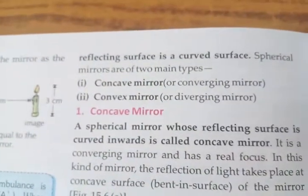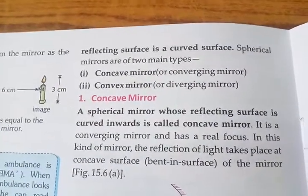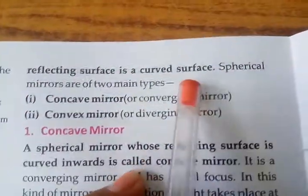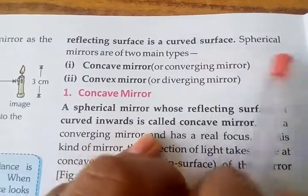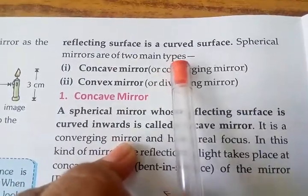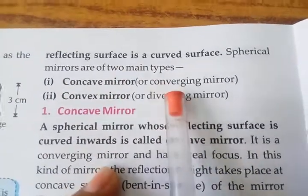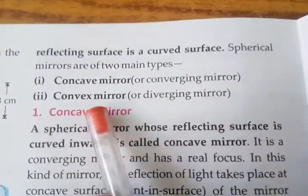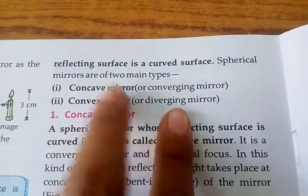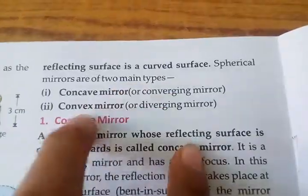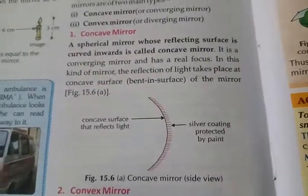Because the reflecting surface is curved, it is called a curved mirror or spherical mirror. Spherical mirrors are of two types: concave mirror (also called converging mirror) and convex mirror (also called diverging mirror). You need to remember these names — concave is the converging mirror and convex is the diverging mirror.